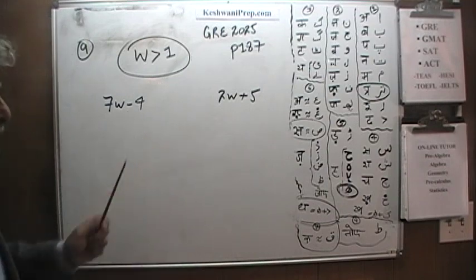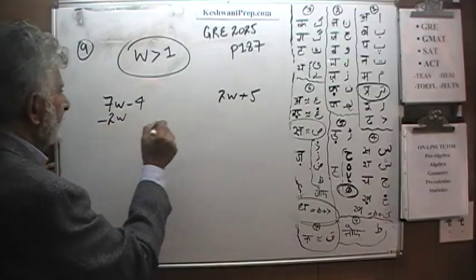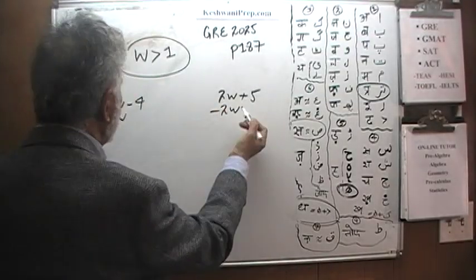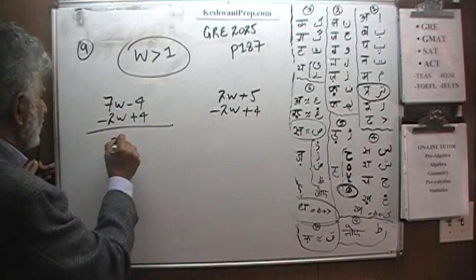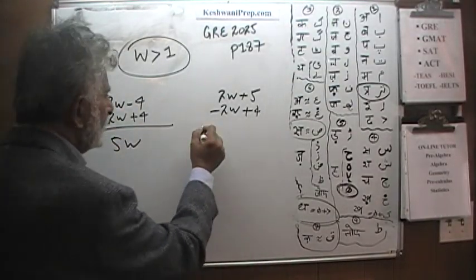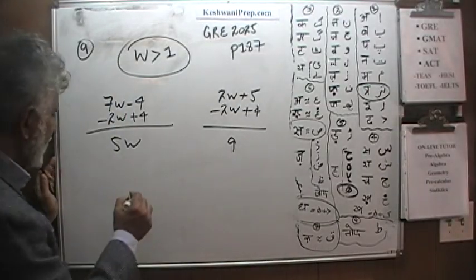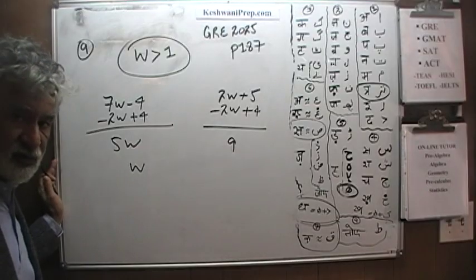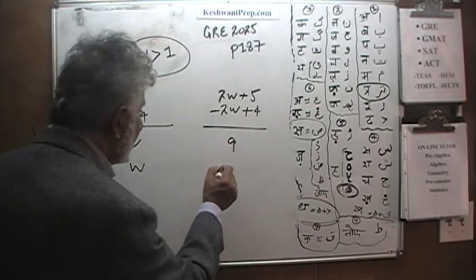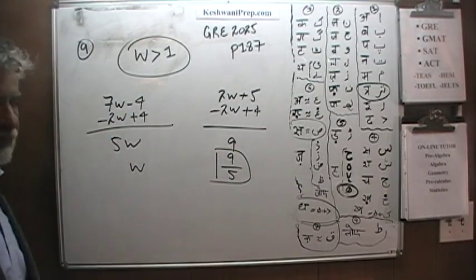Let's solve for w. Let's subtract 2w from both sides, and let's add 4 to both sides. So that gives us 5w, we are comparing 5w versus 9. Let's divide both sides by 5. So what we are essentially being asked to compare is w versus 9 fifths. That's what it boils down to.